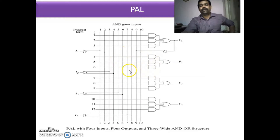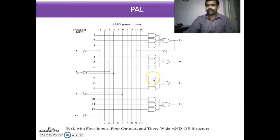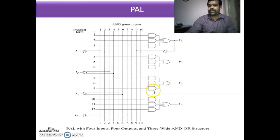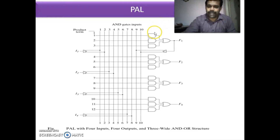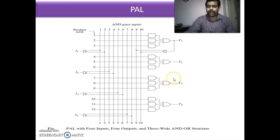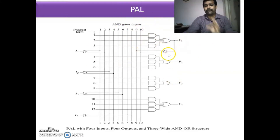An important thing to remember: a term must have only three product terms. If you have more than three product terms, it is difficult to implement. One particular expression must have only three product terms because there are only three AND gates. This PAL is a fixed structure and each section has three AND gates and one OR gate.